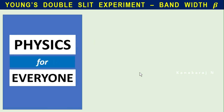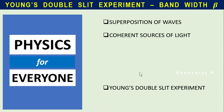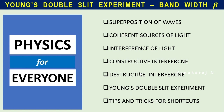Welcome to my channel, Physics for Everyone. My name is Kanagaraj Nadarajan. Today's topic is Young's double slit experiment. To understand Young's double slit experiment, we should know about superposition of waves, coherent sources of light, interference of light, what is constructive interference, and what is destructive interference. After this we will learn Young's double slit experiment in detail, and then we will see some tips and tricks for shortcuts for solving problems in competitive exams.